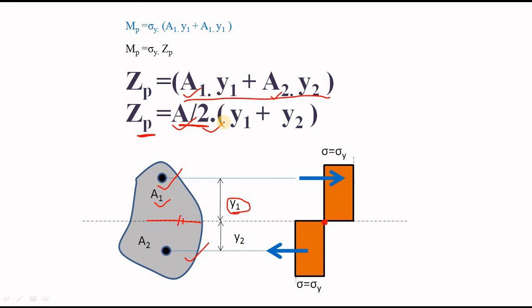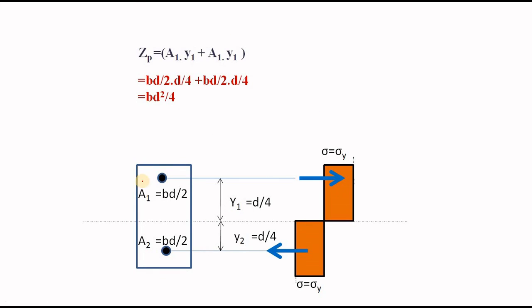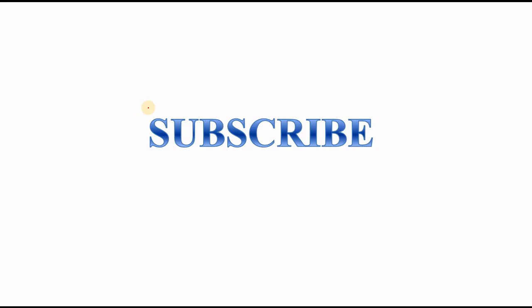Let's calculate the plastic section modulus for a rectangular section. Here A1 = A/2 = bd/2, where b is the width and d is the total depth. y1 is the centroid of the half-section, which is d/4. So ZP = (bd/2)·(d/4) + (bd/2)·(d/4) = bd²/4 — a well-used formula in steel design. If you found this video useful, please don't forget to subscribe.